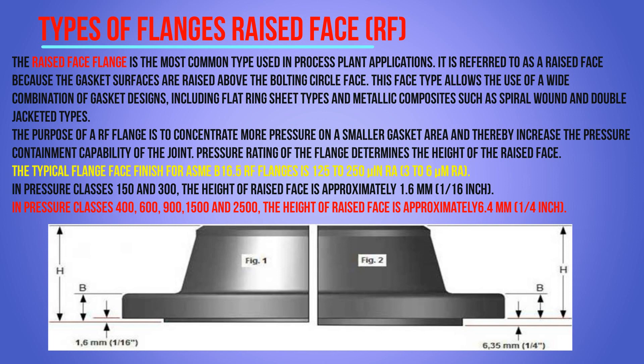The purpose of the raised face flange is to concentrate more pressure on a smaller gasket area, thereby increasing the pressure containment capabilities of the joint. The pressure rating of the flange determines the height of the raised face. The typical flange face finish per ASME B16.5 is 125 to 250 micro inches, or 3 to 6 microns Ra. In pressure class 150 and 300, the height of the raised face is approximately 1.6 mm (1/16 inch).